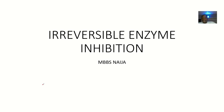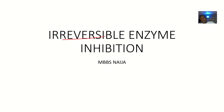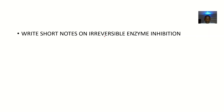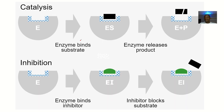Let's quickly look at irreversible enzyme inhibition. Just looking at the word 'irreversible' — it is something that cannot be undone. So an enzyme was inhibited, the enzyme can no longer carry out its activities, and this cannot be undone. They said write short notes on irreversible enzyme inhibition.